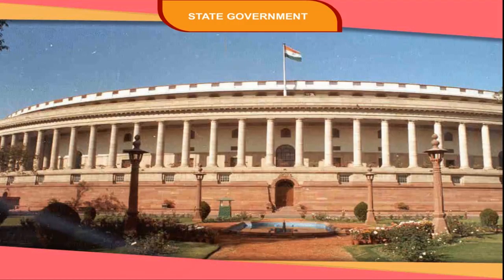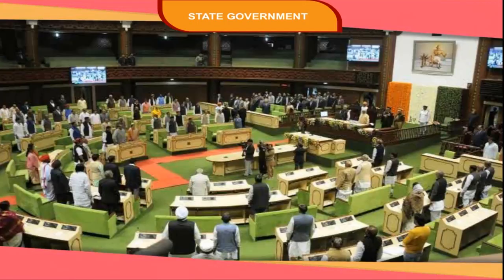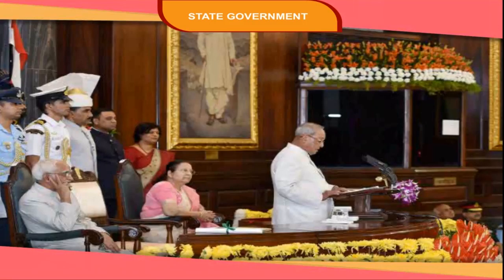The Vidhan Sabha makes laws on the subjects mentioned in the State List. The procedure for passing a law is similar to that at the Centre. However, if a Governor feels that a particular law will not benefit the State, he can withhold his assent and send it to the President.